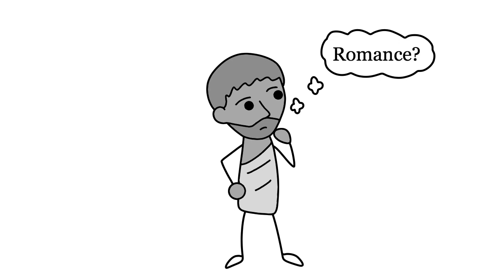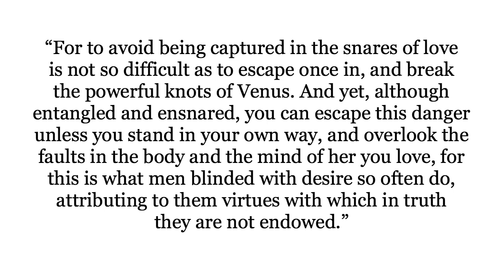Here's Lucretius, an Epicurean, from his poem On the Nature of the Universe. For to avoid being captured in the snares of love is not so difficult as to escape once in, and break the powerful knots of Venus. And yet, although entangled and ensnared, you can escape this danger unless you stand in your own way, and overlook the faults in the body and the mind of her you love. For this is what men blinded with desires so often do, attributing to them virtues with which in truth they are not endowed.